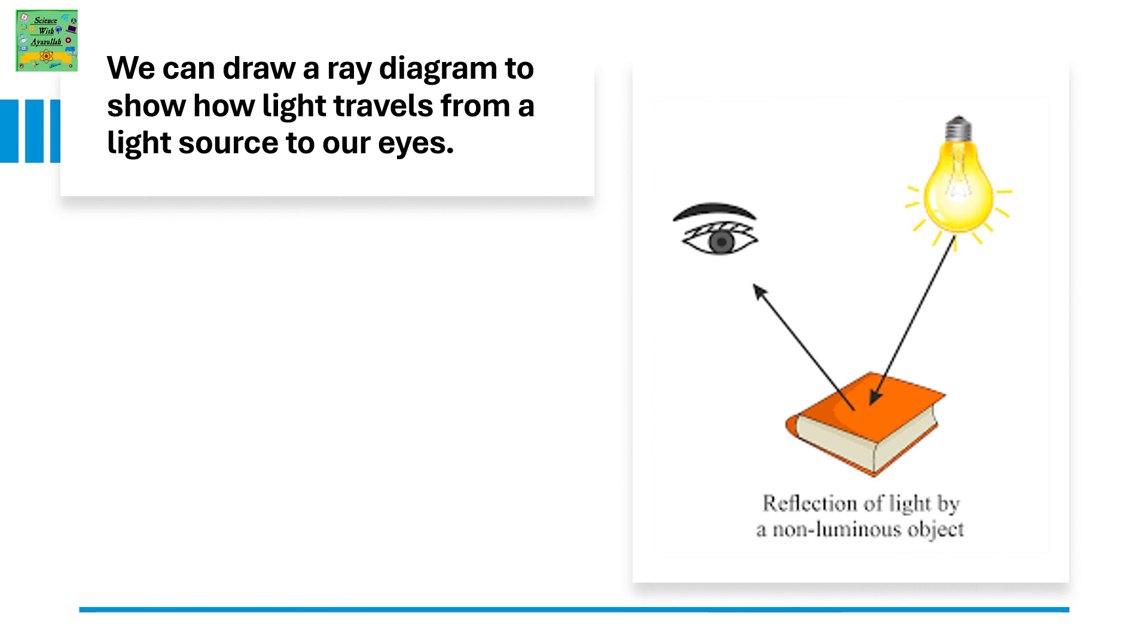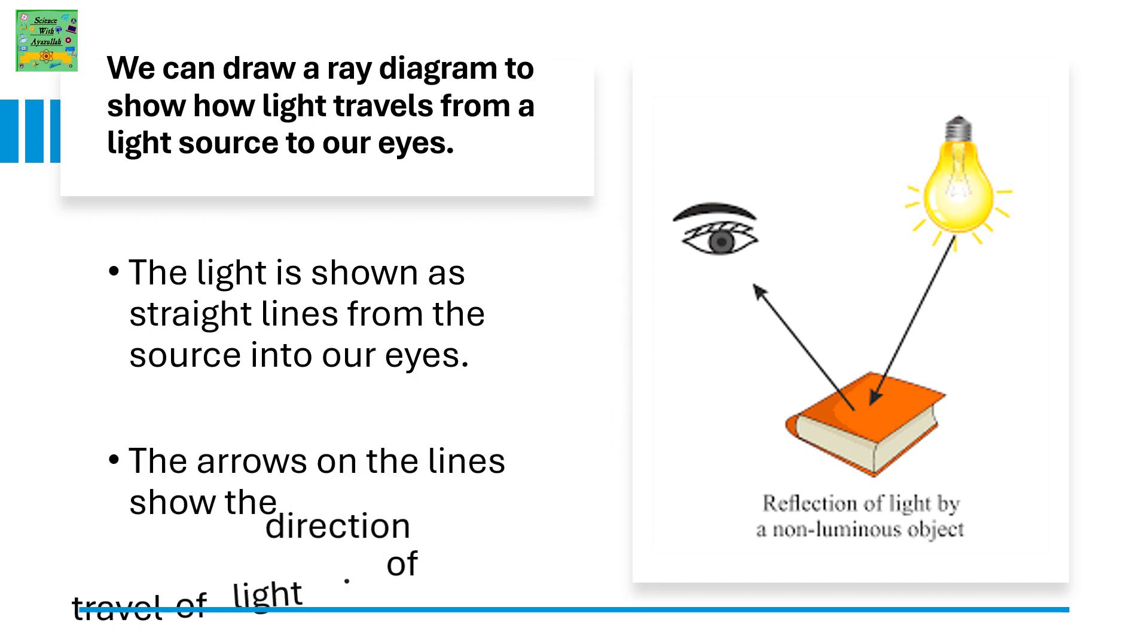We can draw a ray diagram to show how light travels from a light source to our eyes. The light is shown as straight lines from the source into our eyes. The arrows on the lines show the direction of travel of light.